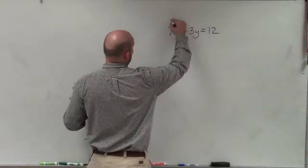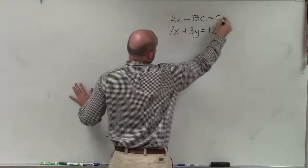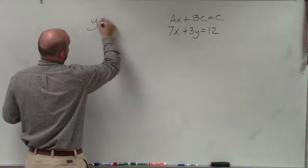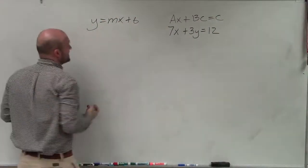Basically, here's standard form: Ax plus By is equal to C. And what we want to do to write in slope-intercept form is we want to write as y equals mx plus b, meaning the y is by itself.